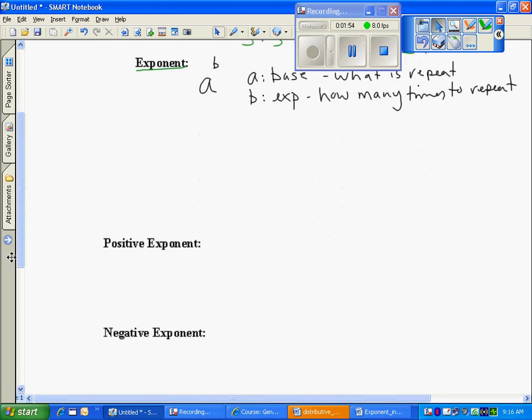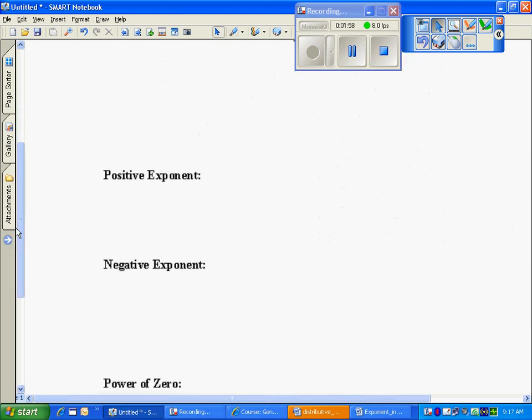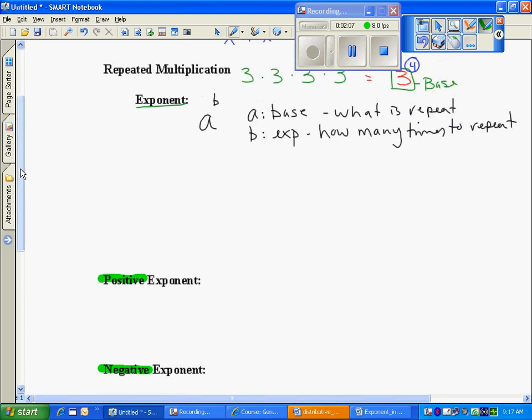But when we look at exponents, we're really going to have three essential types. We're going to have a positive value in the exponent position, we might have a negative, or we might have zero. So we need to look at what those might really represent.